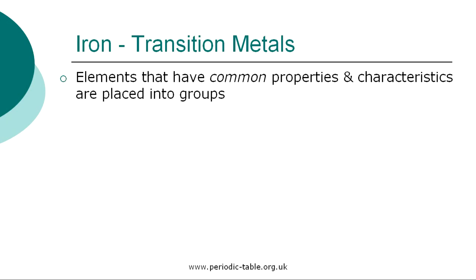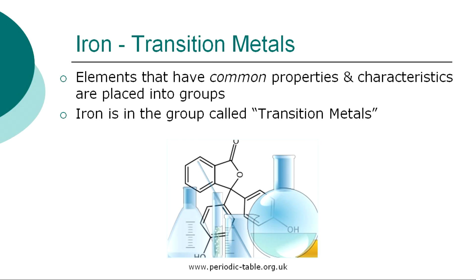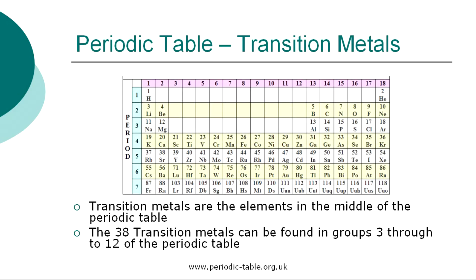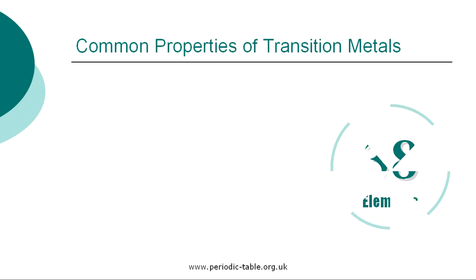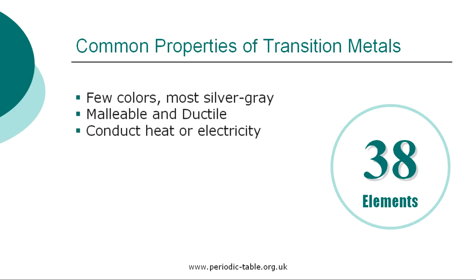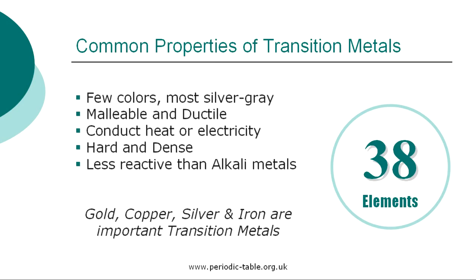Once the properties of an individual element have been identified, it is placed into a group of elements which have common properties and characteristics. Iron is in the group called the transition metals. The 38 elements classified as transition metals are found in the middle of the periodic table in groups 3 through 12. Only a few of the transition metals are colored; most of them are silver gray or silver bluish. As with all metals, the transition elements are ductile and malleable and good conductors of electricity and heat. They are generally hard and dense and less reactive than the alkali metals. Iron, copper, silver, and gold are important transition metals.